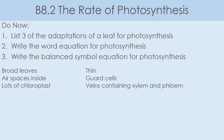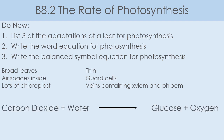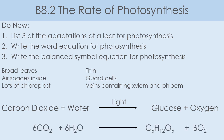Our word equation for photosynthesis: carbon dioxide plus water goes to glucose and oxygen. We remember to put the word 'light' over our arrow. And the balanced symbol equation for photosynthesis: 6CO₂ + 6H₂O → C₆H₁₂O₆ + 6O₂, again with 'light' indicated over the arrow.